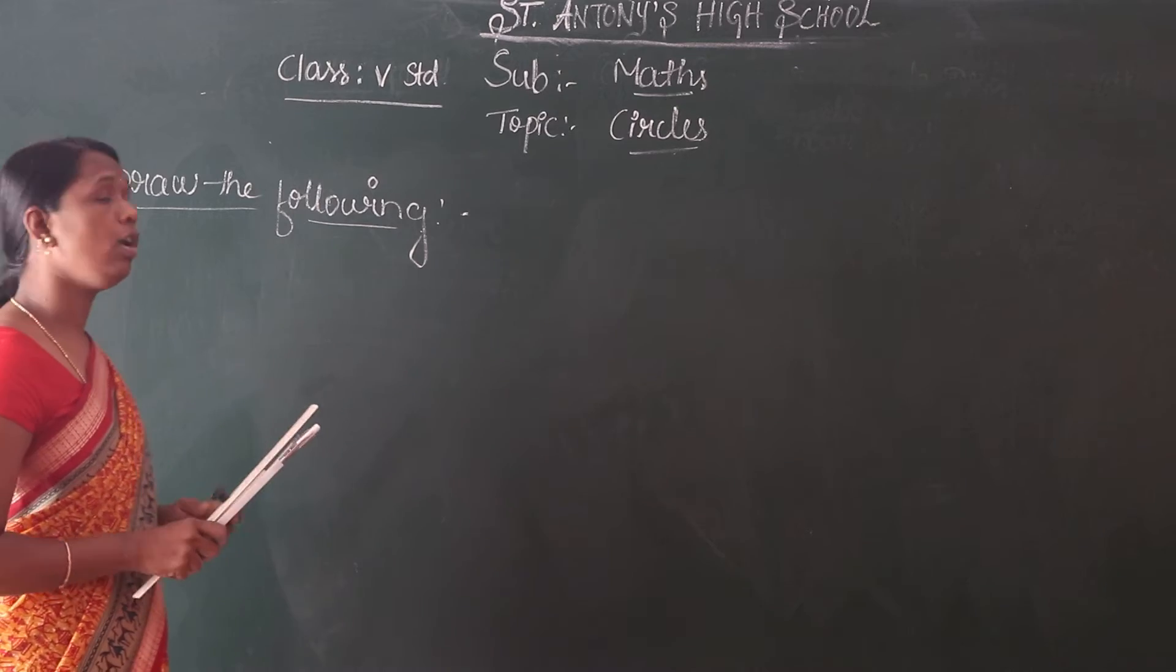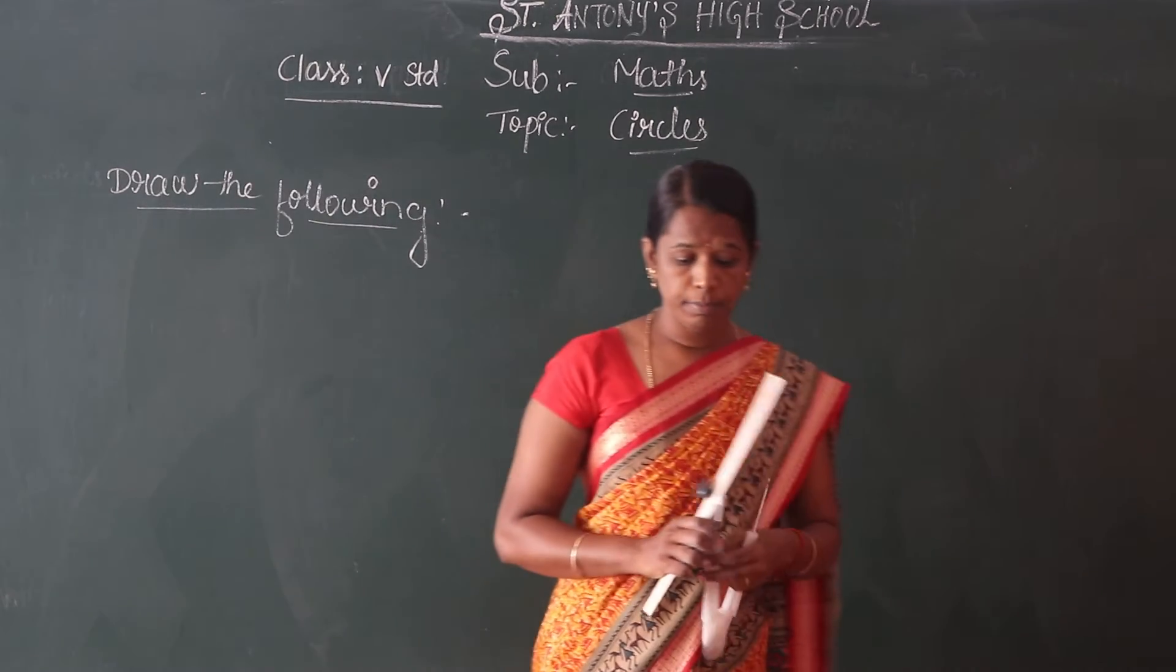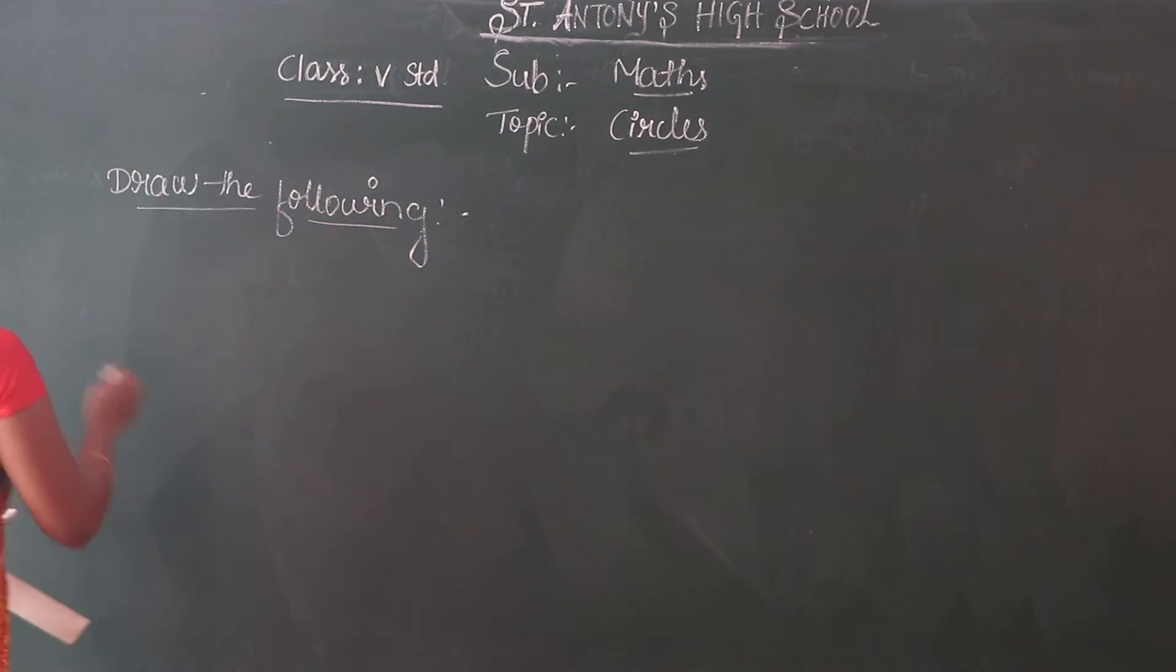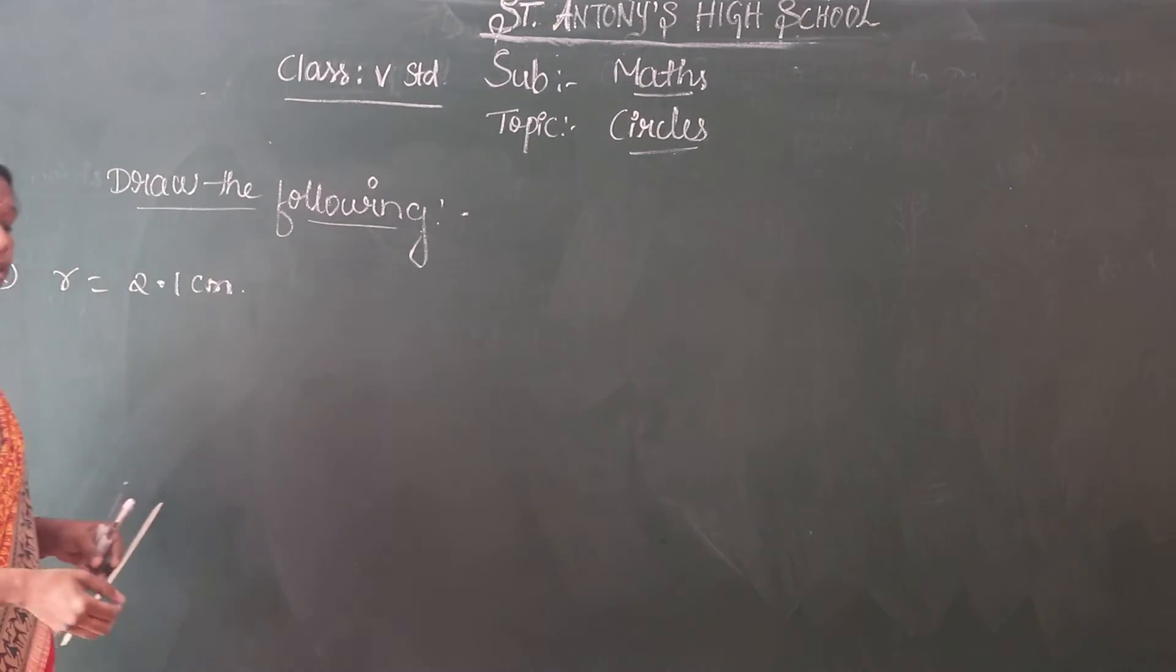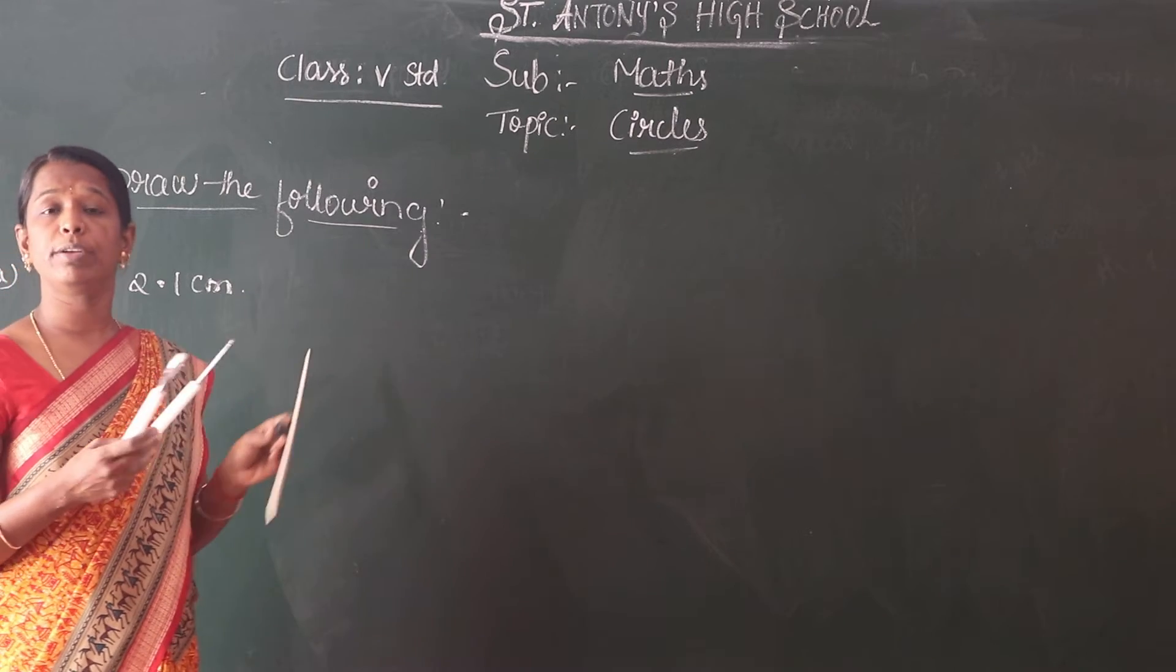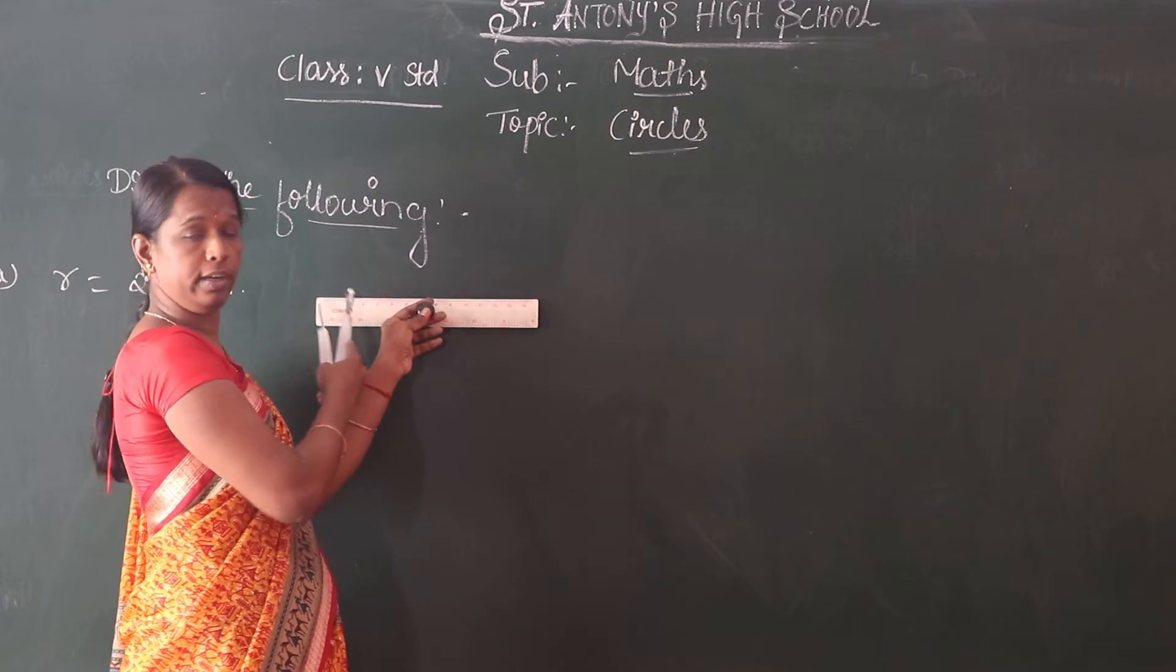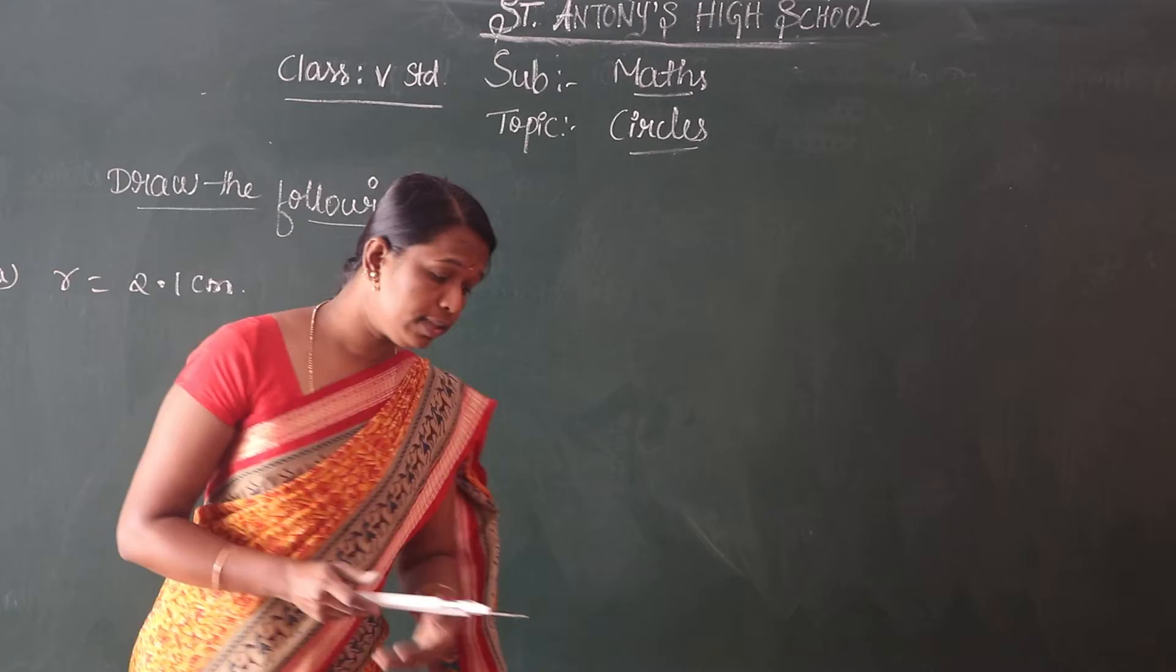Here we have to draw some of the following, means construct the following circles using the radius. For example, first one, the radius is about 2.1 cm. Take 2.1 cm as the radius of the circle. So I'll show that. Take the measurement using the ruler from 0 to 2.1, 2 point 1 line. So construct, first construction.